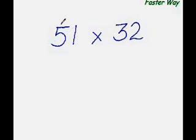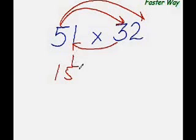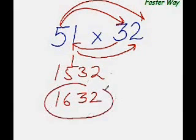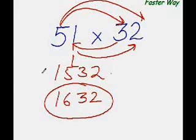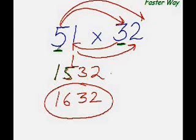Now let me show you the faster way of multiplying any two-digit number with any other two-digit number. My answer is 1632. Let me explain in more detail: all I have done is multiply the first digit of this number — the most significant digit — with the first digit of the other number. So 5 times 3 is 15, and I've written 15 here.